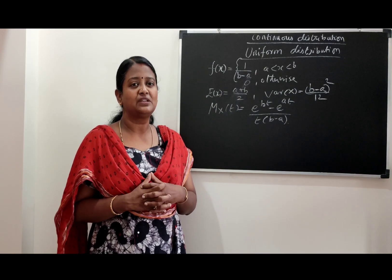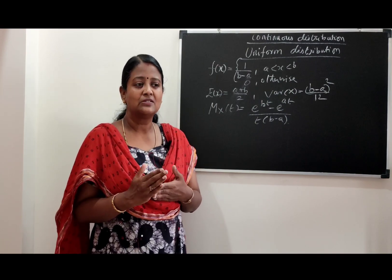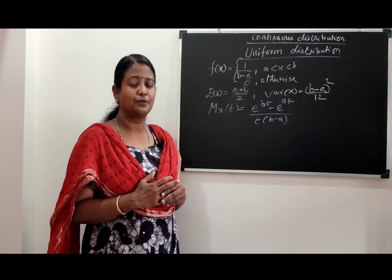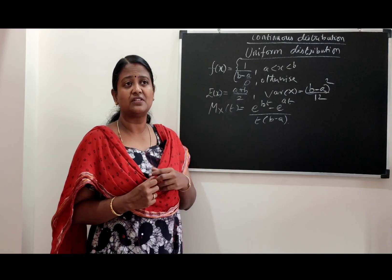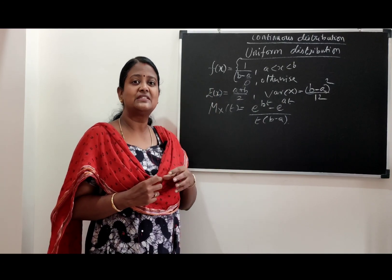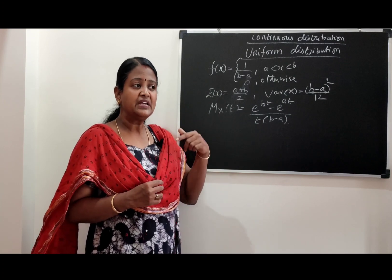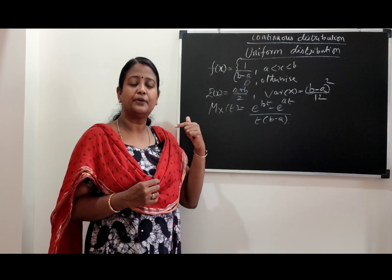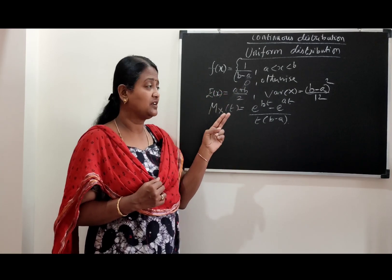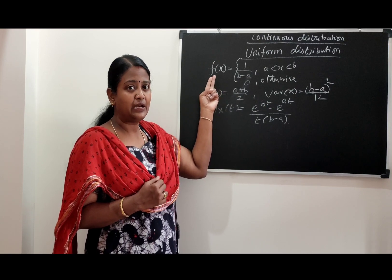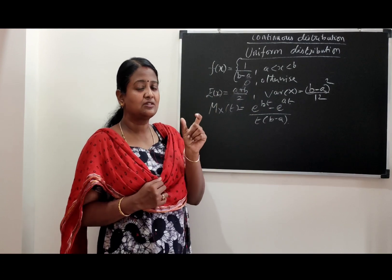The integration part is very easy — it is the difference between the numbers. There is a constant number. For the Continuous Random Variable we say probability density function, not probability mass function. The probability density function value is f(x) = 1/(b - a). It is constant.